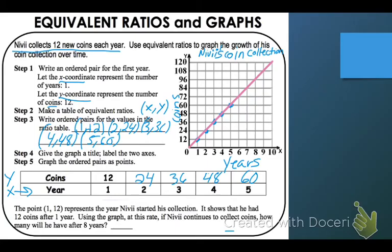And it says the point 1, 12, or the coordinate 1, 12, represents the year Nivi started his collection. It shows that he had 12 coins after 1 year. Using this graph, at this rate, if Nivi continues to collect coins, how many will he have after 8 years?